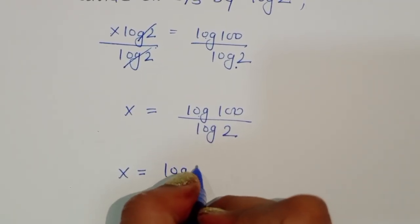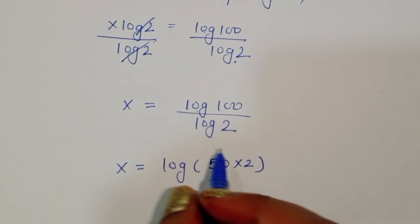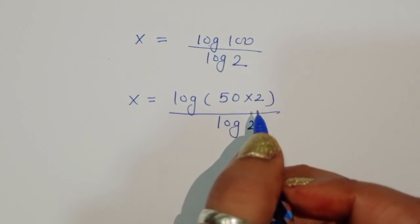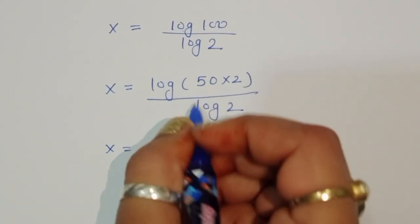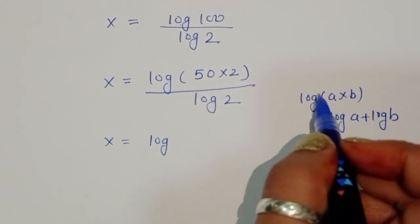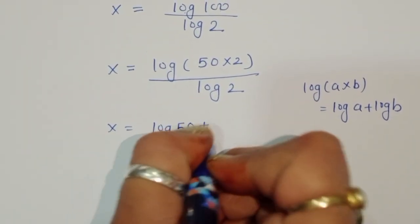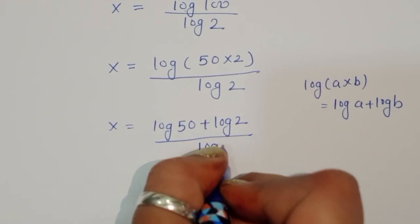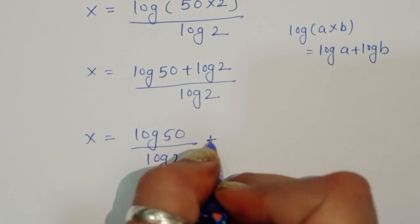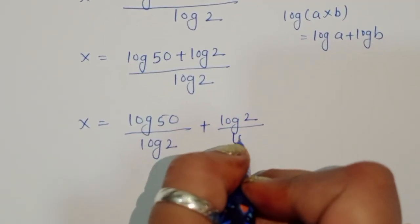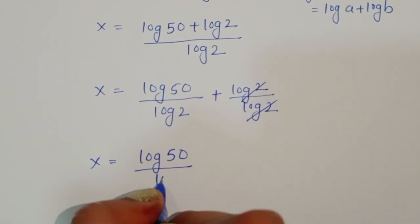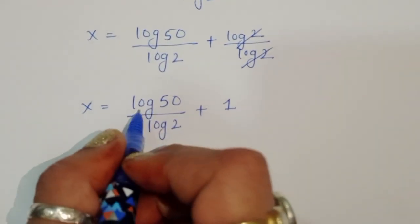Using the formula log(a × b) = log(a) + log(b), we get x = (log(50) + log(2)) / log(2). Separating terms: x = log(50)/log(2) + log(2)/log(2). Since log(2)/log(2) = 1, we get x = log(50)/log(2) + 1.